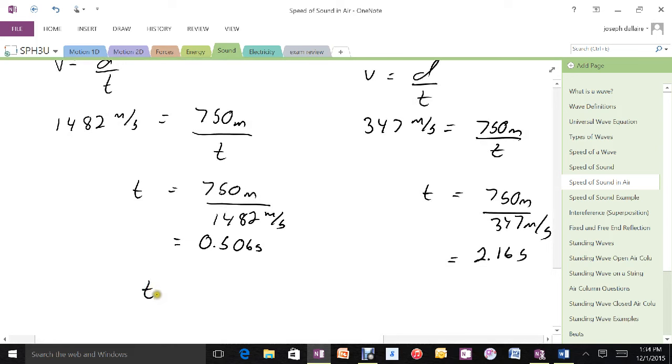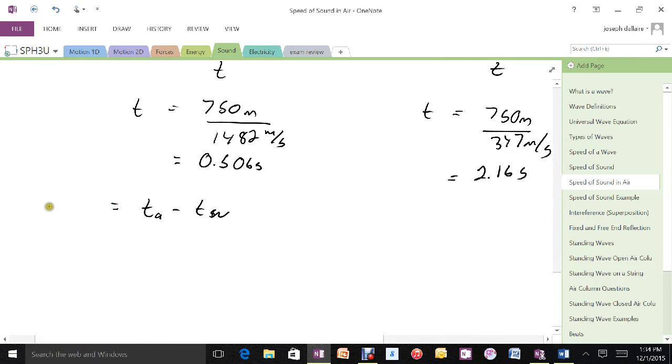So the T of the air minus the T of the water is the difference in the two times. So 2.16 seconds minus 0.506 seconds. And I got 1.65 seconds is how much longer it's going to take.